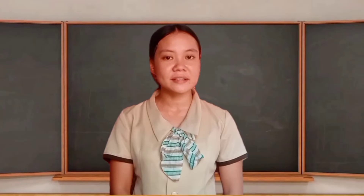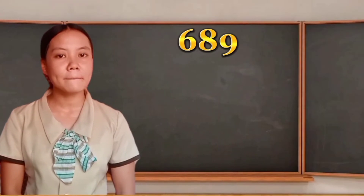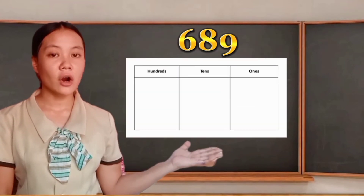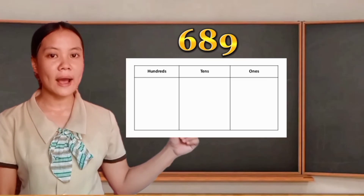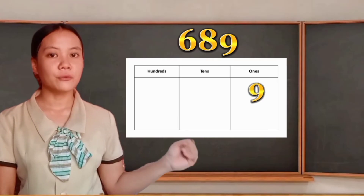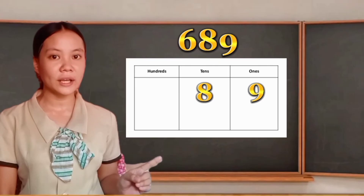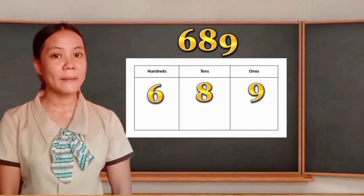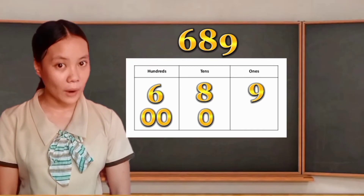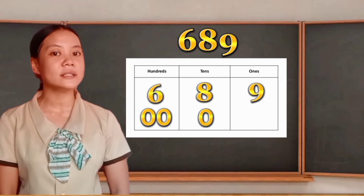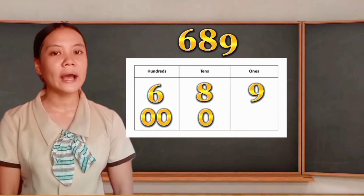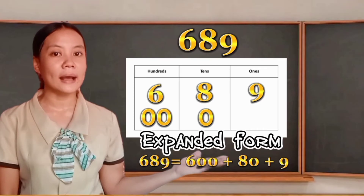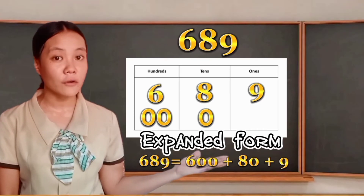Here is another example of a three-digit number in expanded form. The number 6, 8, 9, or 689. All we need to do, class, is draw a table with ones, tens, and hundreds. For the ones, we have 9; for the tens, we have 8; and for the hundreds, we have 6. So, remember: add two zeros in hundreds, one zero in tens, and the number itself for ones. Therefore, class, we write 689 in expanded form like this: 600 plus 80 plus 9. That will be the expanded form of 689.